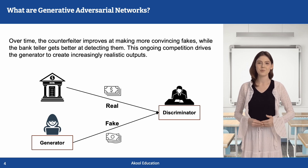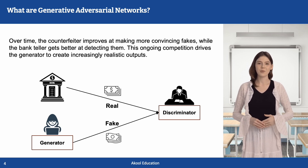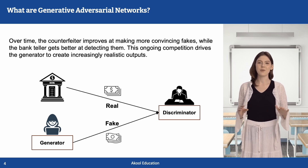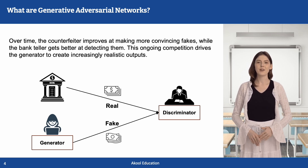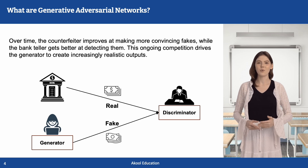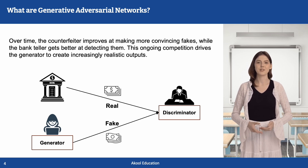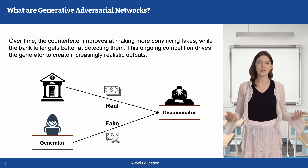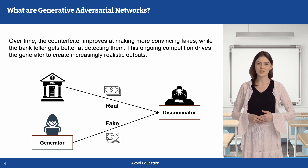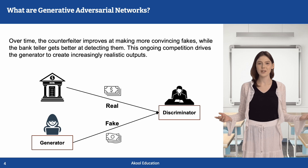Meanwhile, the bank teller also becomes more skilled at spotting fake money. This continuous competition leads to a system where the counterfeits become almost indistinguishable from real money. This analogy mirrors how GANs function, where the generator continuously learns to create better data, while the discriminator learns to become more accurate.